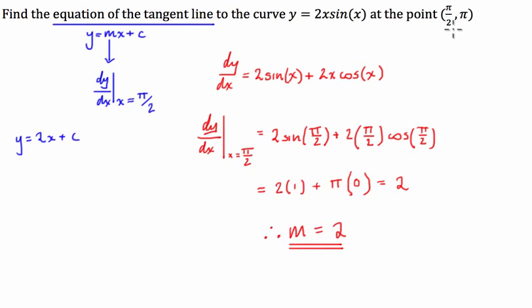Now we're going to sub in our point, x equals pi over 2, y equals pi, so you have pi equals 2 times pi over 2 plus c. So pi is going to equal pi plus c. So c is quite simply 0.